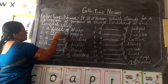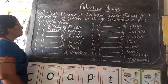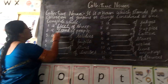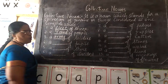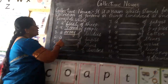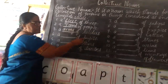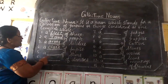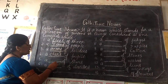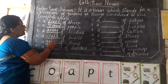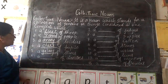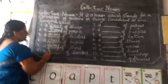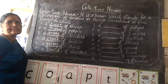A crowd of people. A dash of soldiers — an army of soldiers. A dash of pupils — a class of pupils. A dash of stars — a galaxy of stars. A dash of directors — a board of directors.